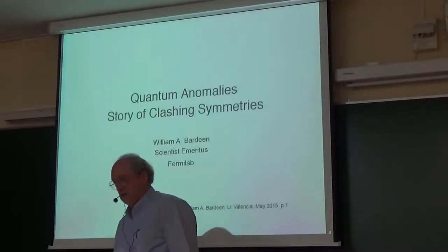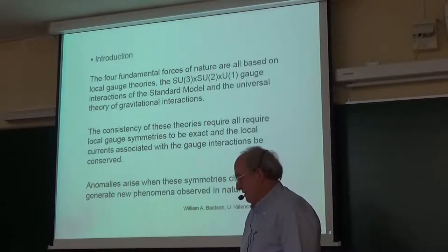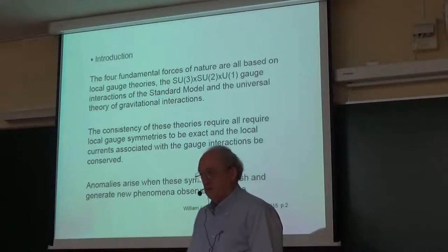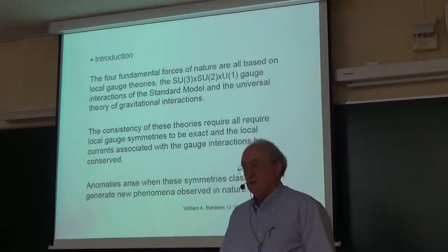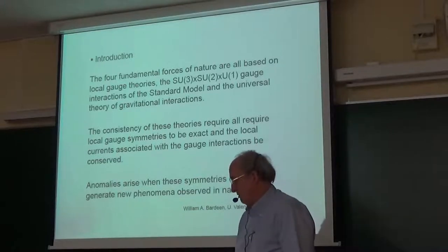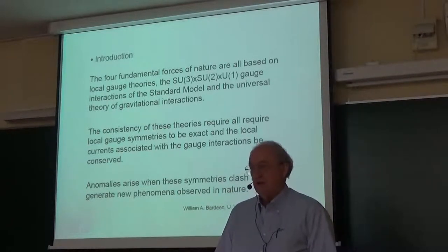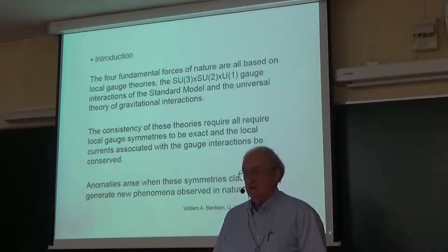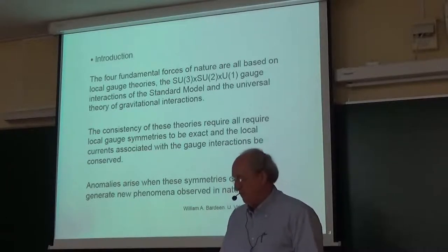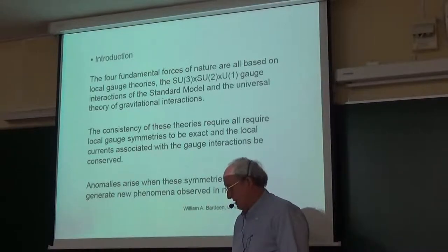Symmetries play a huge role in the standard model of quantum anomalies. The four fundamental forces of nature are all based on local gauge theories. The SU(3) × SU(2) × U(1) gauge interactions are the standard model. One can view gravity as a theory that has a local gauge invariance related to the conservation of the gravitational interactions. There are also many global symmetries like isospin and flavor symmetries of the standard model, which are described by symmetries or approximate symmetries. Anomalies play a role not only in the realm of local symmetries, but also in the clash between global symmetries and local symmetries.